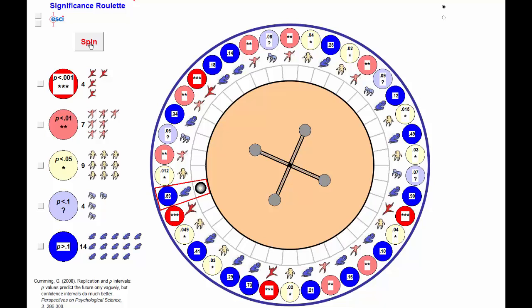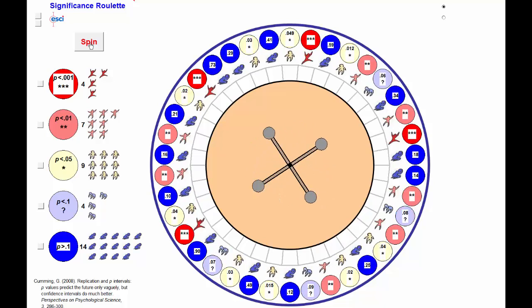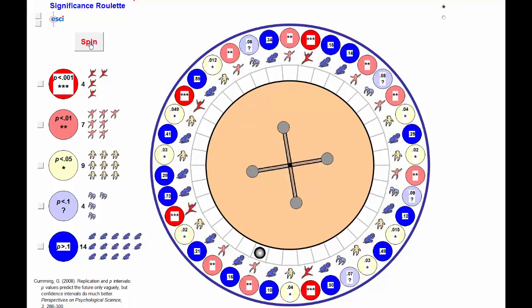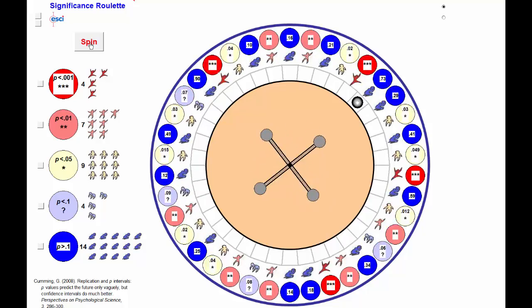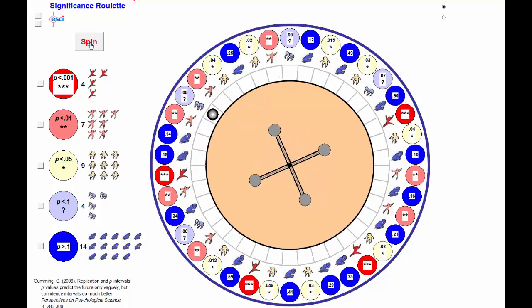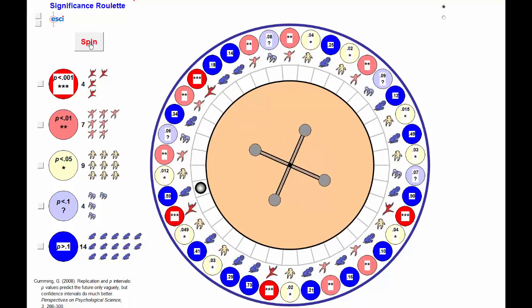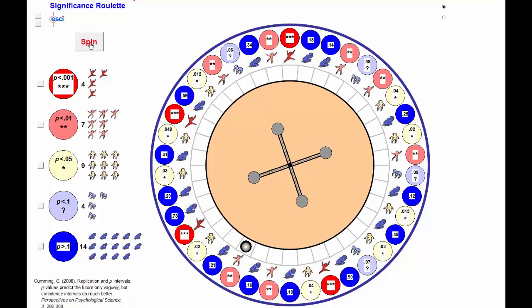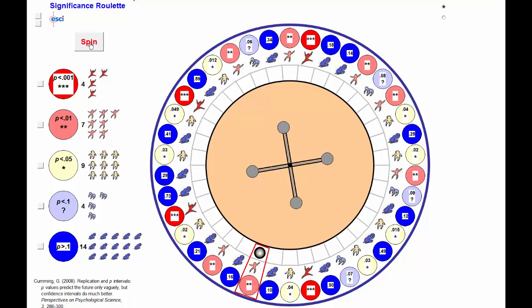P = 0.6. Another p-value. Round it goes, where will it land? P less than 0.1. Two stars.